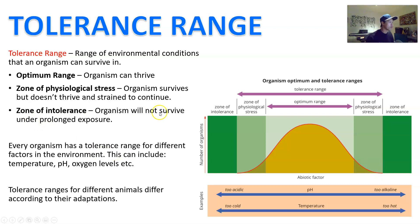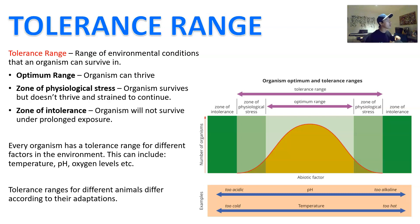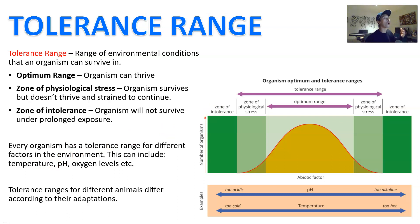Then you have the zone of intolerance. The zone of intolerance is when the organism cannot tolerate that particular condition and will die under prolonged exposure, which can obviously range between organisms and species. Every organism has a tolerance range for different factors in the environment — for example, temperature tolerance range, pH tolerance range, the amount of oxygen in the air or the water. Usually it's referring to an abiotic factor.